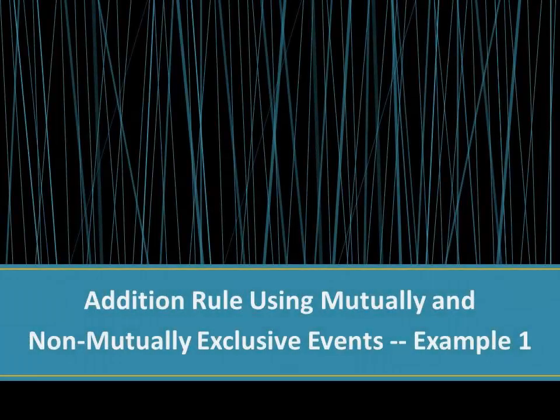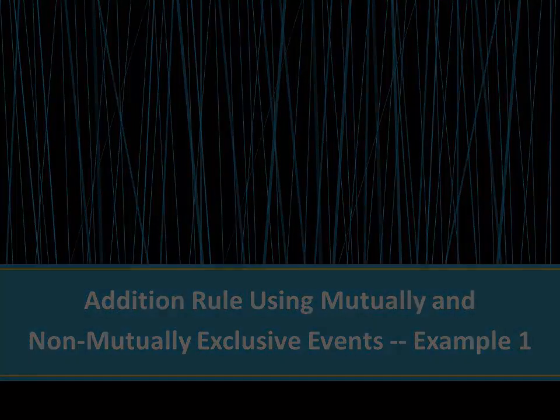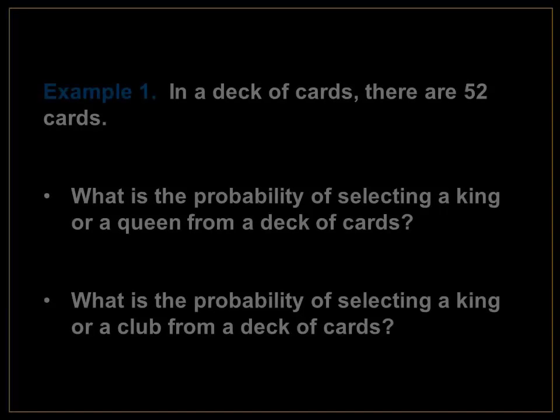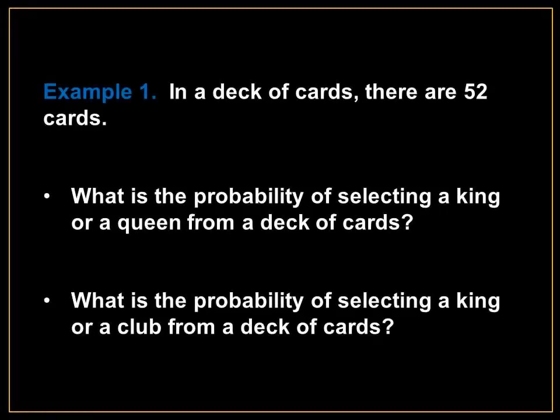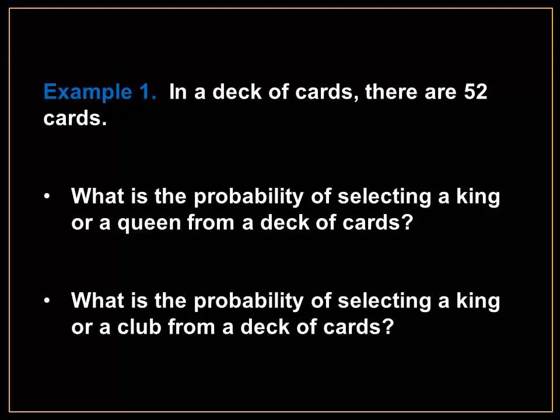The addition rule using mutually and non-mutually exclusive events. For example, in a deck of cards there are 52 cards. Question number one asks: what is the probability of selecting a king or queen from a deck of cards? And question number two asks: what is the probability of selecting a king or a club from a deck of cards?